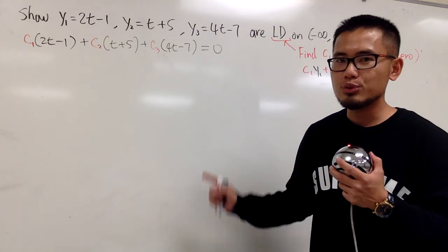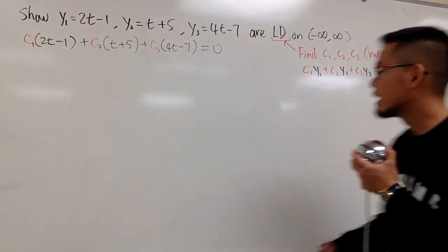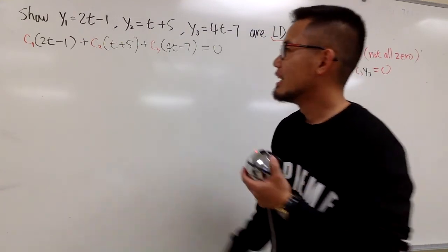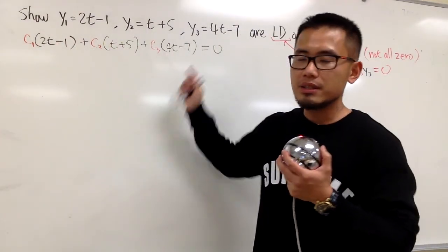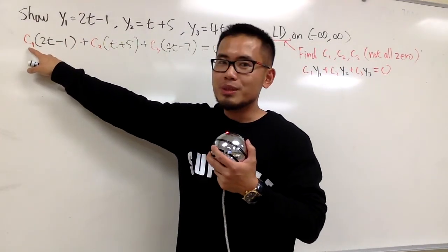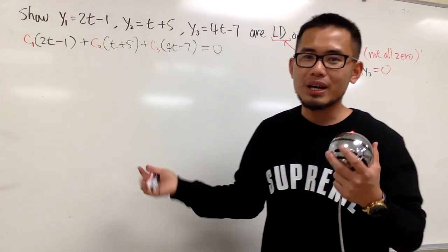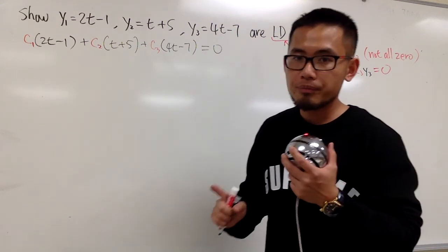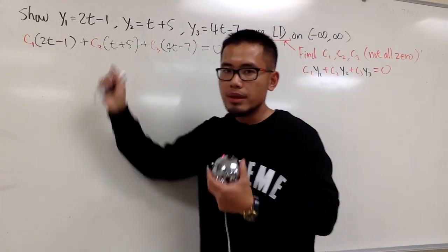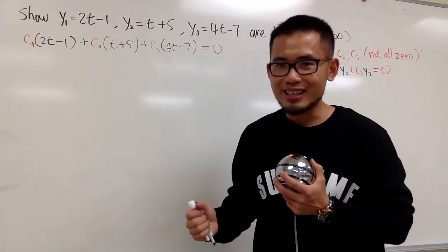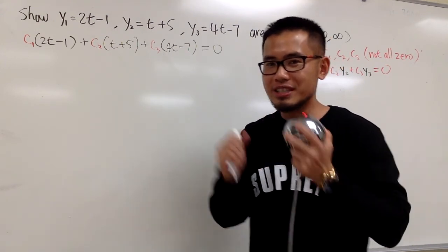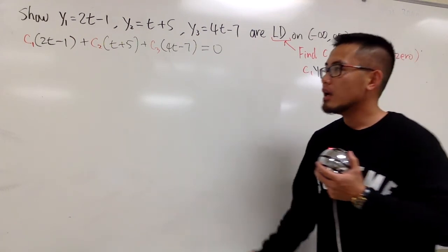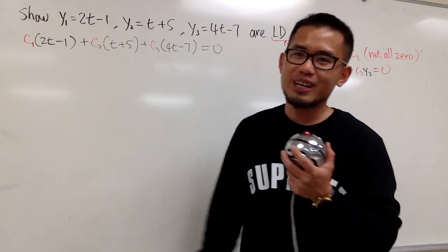And c1, c2, c3, once again, the condition is that they are not all zero. And this is how we can do it. First of all, as you can see, we have to distribute c1 to the parentheses. And we have linear terms in the parentheses. We will distribute and we can just combine like terms. We will have the terms with t and then also just the constant terms. Let me just combine the like terms for you guys.